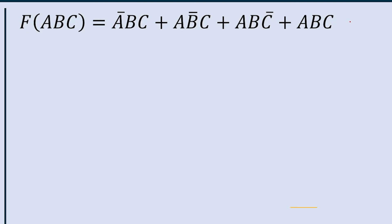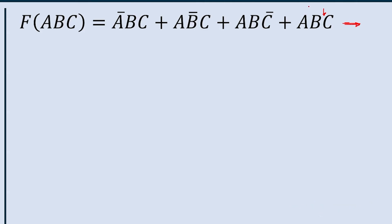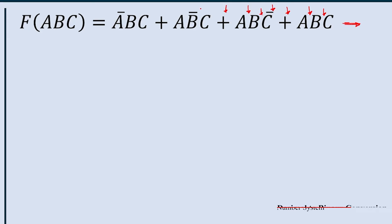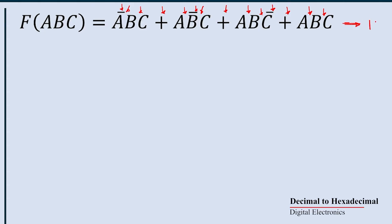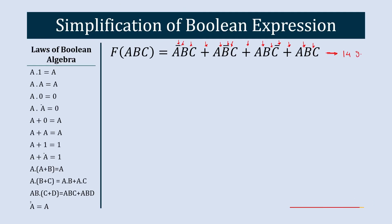First, let's count how many gates we need to implement this new equation: AND gate, another AND gate, OR gate, NOT gate, AND gate, AND gate, OR gate, AND gate, NOT gate, AND gate, OR gate, AND gate, AND gate, NOT gate — one, two, three, four, five, six, seven, eight, nine, ten, eleven, twelve, thirteen, fourteen. We need 14 gates to represent this equation. Now let's start the simplification process.